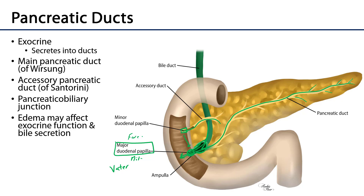If there is any edema — through infection or a neoplastic growth affecting the head of the pancreas — this can be very problematic physiologically, because it can occlude the flow of bile and pancreatic juice into the small intestines, affecting secretions into the duodenum.